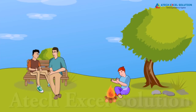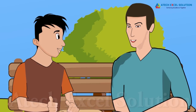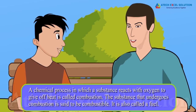What is he doing, Dad? He is simply trying to get some heat. He is burning small pieces of wood to get some heat in the presence of oxygen. A chemical process in which a substance reacts with oxygen to give off heat is called combustion. The substance that undergoes combustion is said to be combustible — it is also called a fuel.